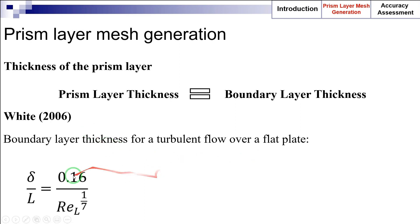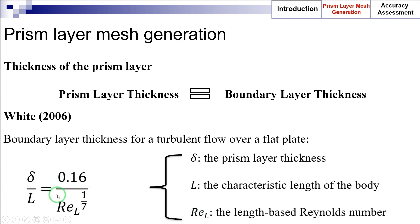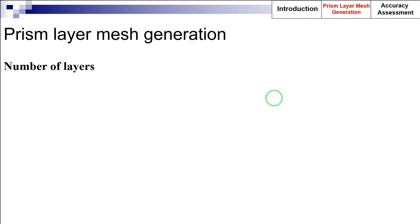In this equation, delta is the prism layer thickness, L is the characteristic length of the body, and Re_L is the length-based Reynolds number. Note that using this equation we are assuming that the prism layer thickness is equal to the thickness of the boundary layer, which is a valid assumption.